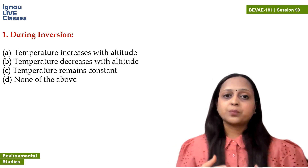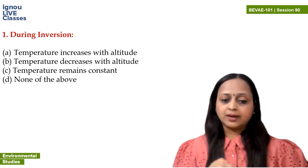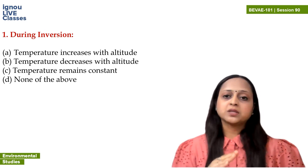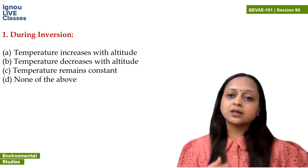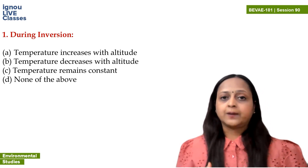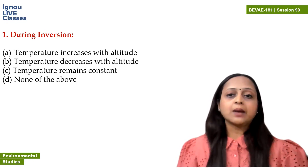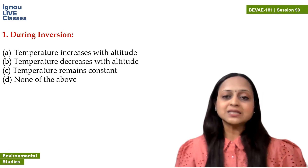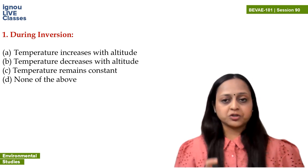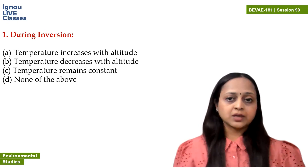In the troposphere where we live, the average temperature at ground level is 15 degrees Celsius. As we go up, temperature starts to decrease. This decrease with height is normal. But if temperature starts to increase with height in the troposphere, we are talking about temperature inversion.